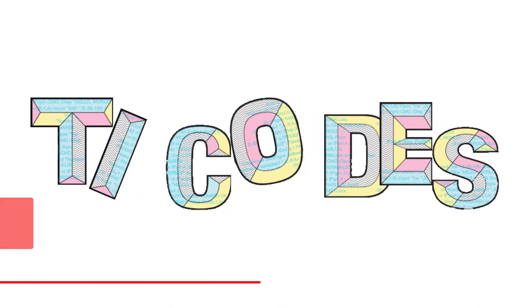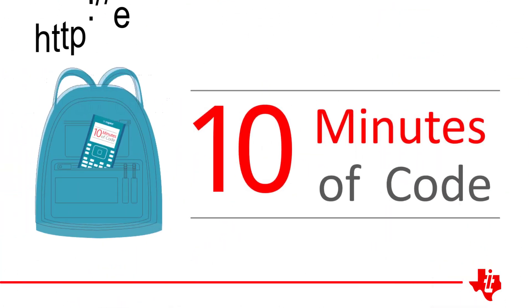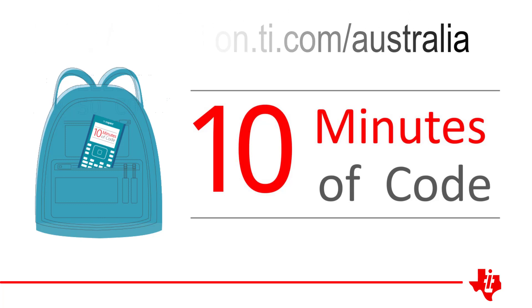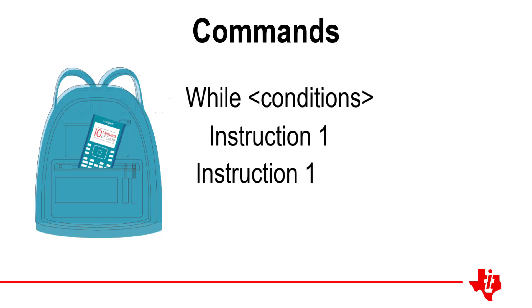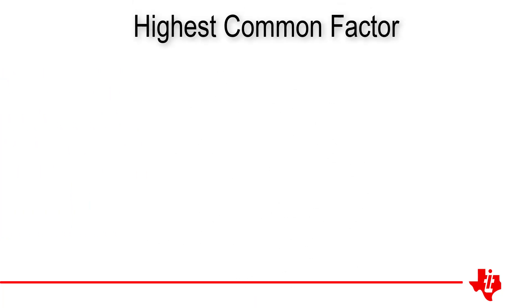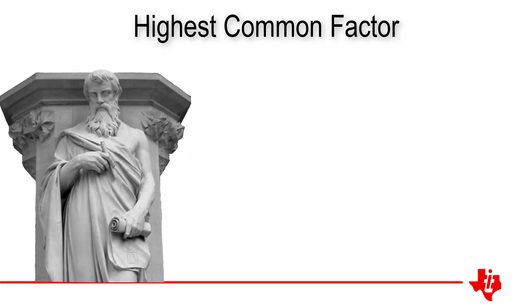This tutorial is a supplementary session designed as an extension to the free 10 minutes of coding lessons available from the Texas Instruments website. In this session, we introduce the while loop. Sometimes we need to repeat a set of instructions until a specific condition or set of conditions have been met. A nice example of this is Euclid's algorithm for finding the highest common factor of two numbers.